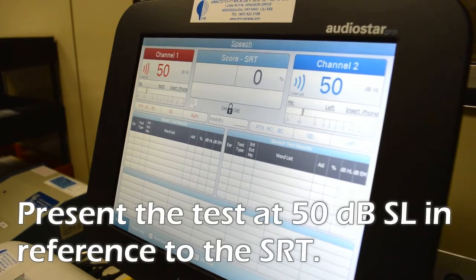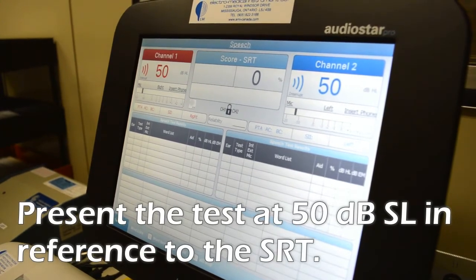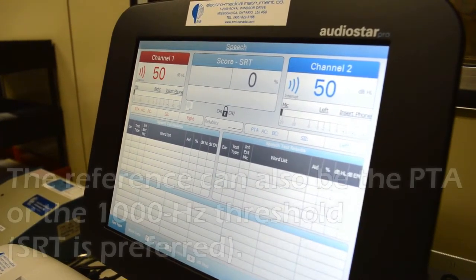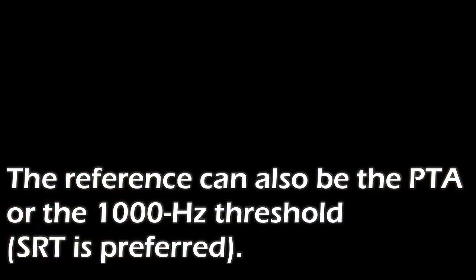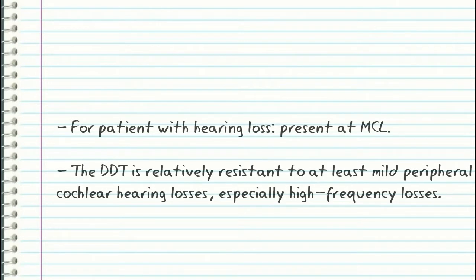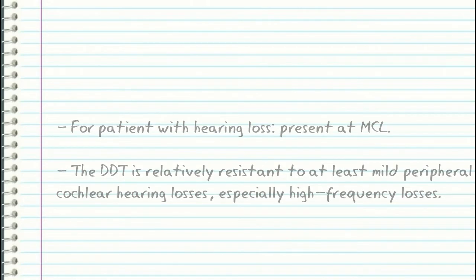Present the test at 50 dB sensation level in reference to the SRT. The reference can also be the pure tone average or the 1000 Hz threshold, although the SRT is preferred. For a patient with hearing loss, present at their most comfortable hearing level. This test is relatively resistant to at least a mild peripheral cochlear hearing loss, especially high frequency hearing loss.